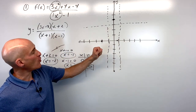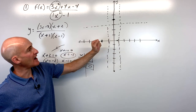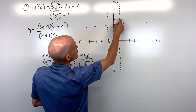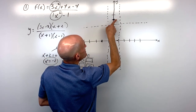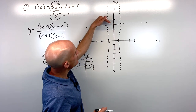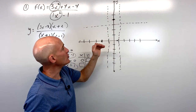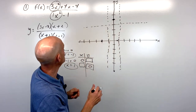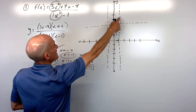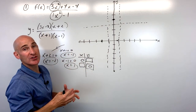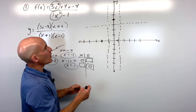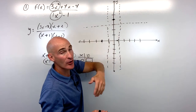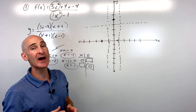Now we've got our key points and asymptotes. The last thing is to find out what happens as you approach the vertical asymptotes from the left and right. You cannot cross a vertical asymptote — the graph will turn up toward positive infinity or down toward negative infinity. I'll show you sign analysis now.